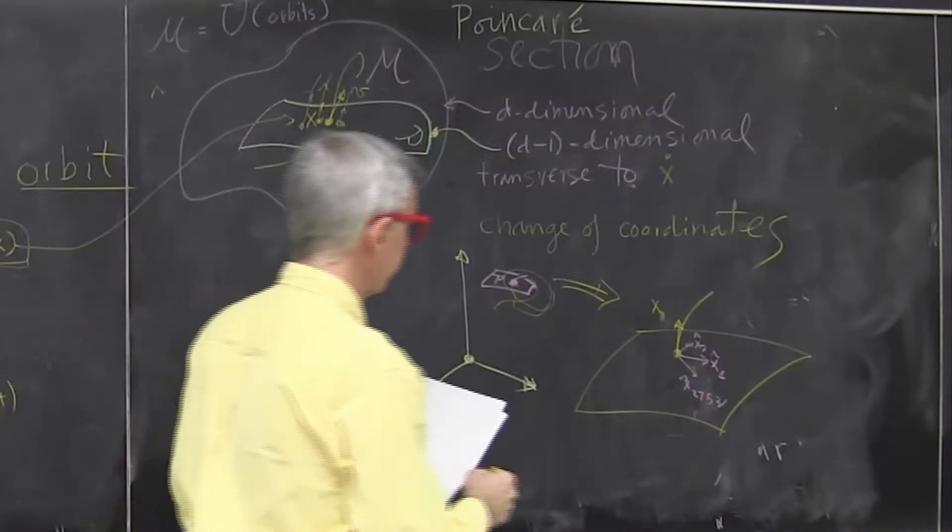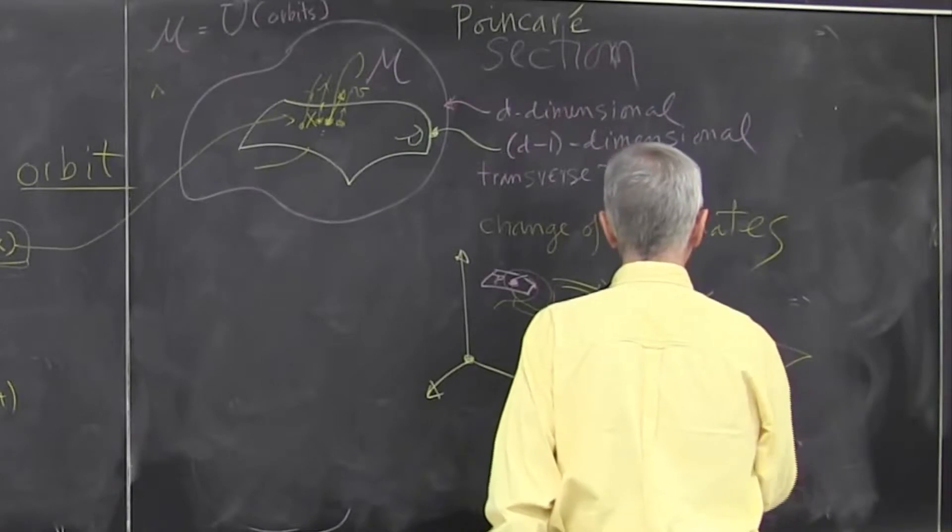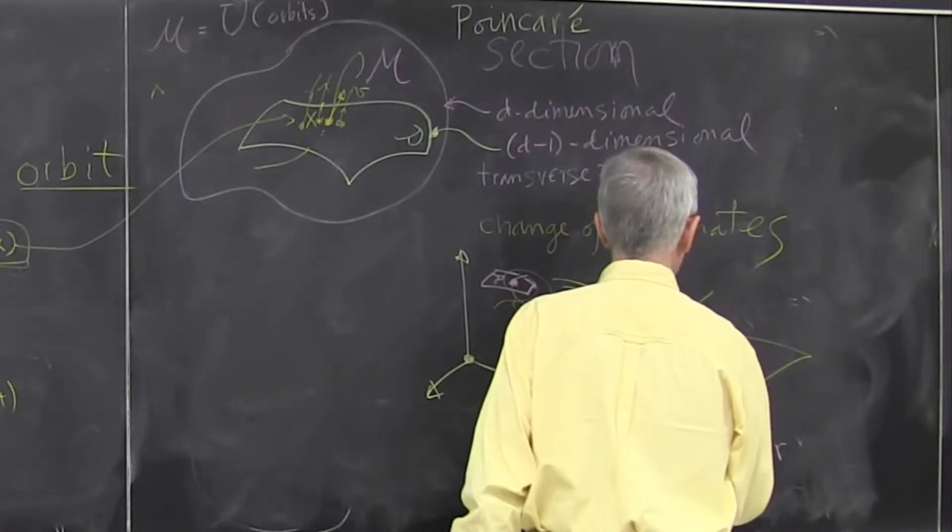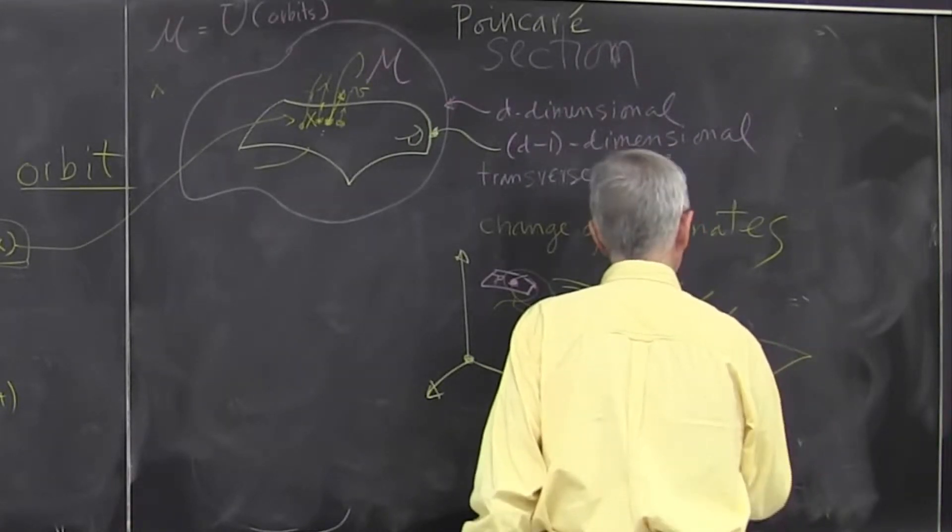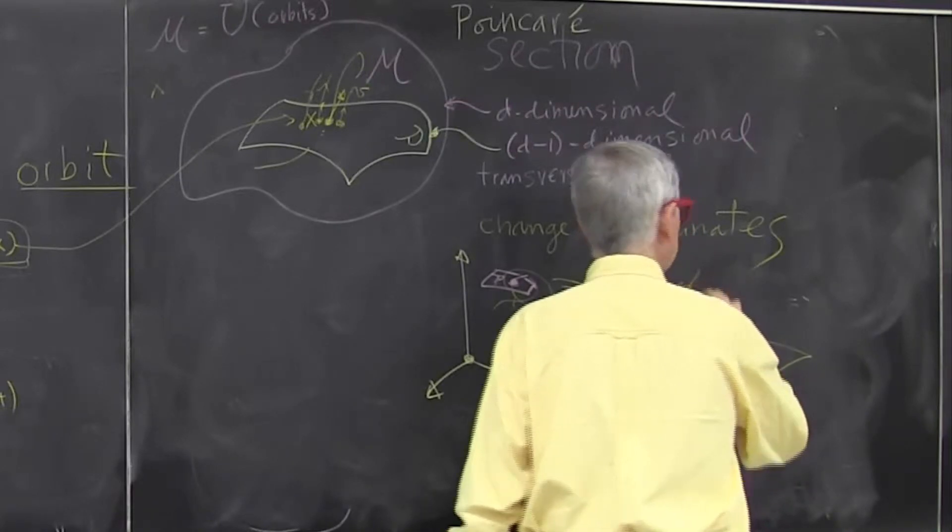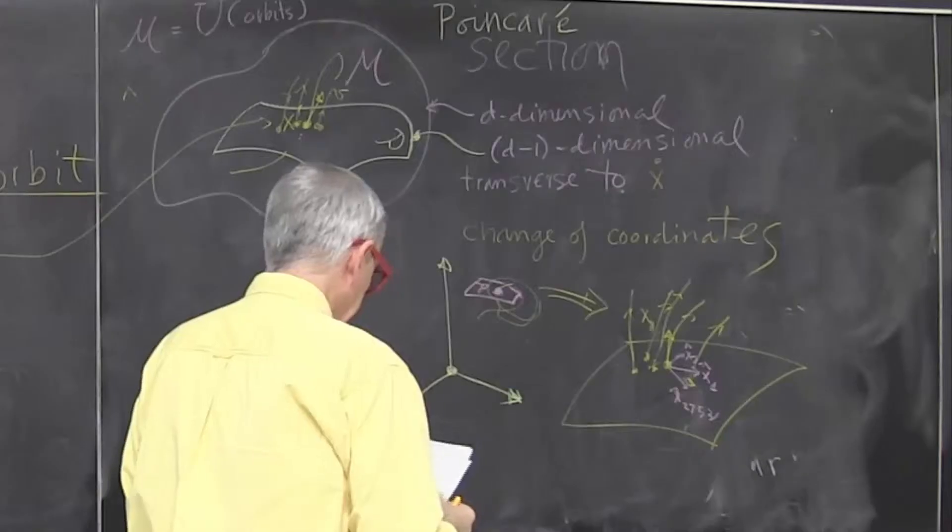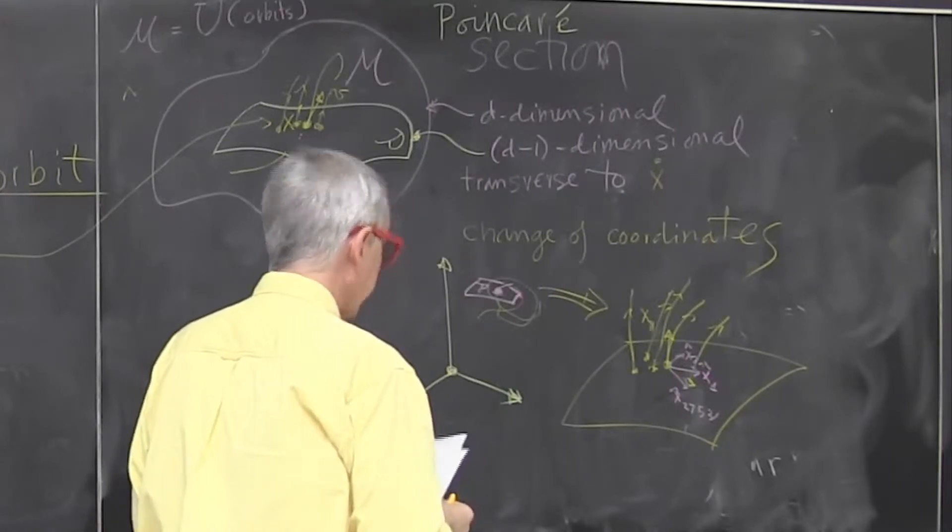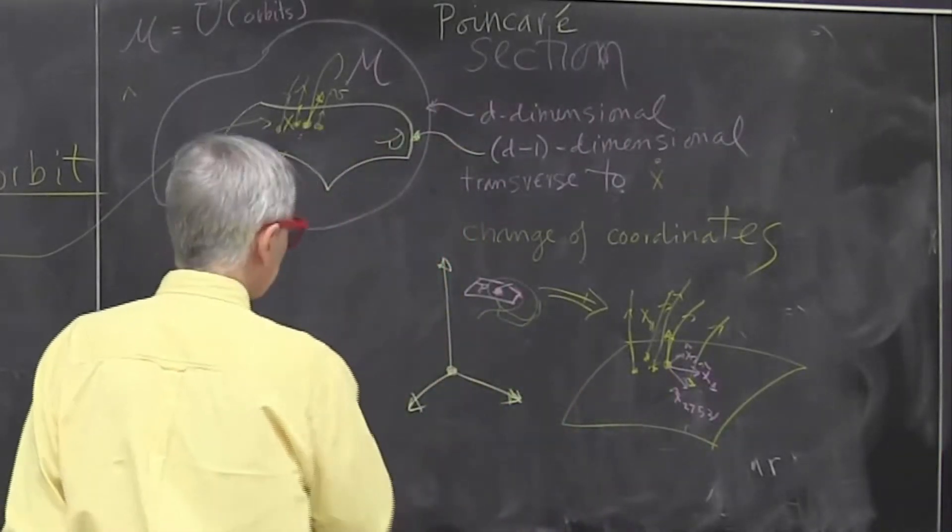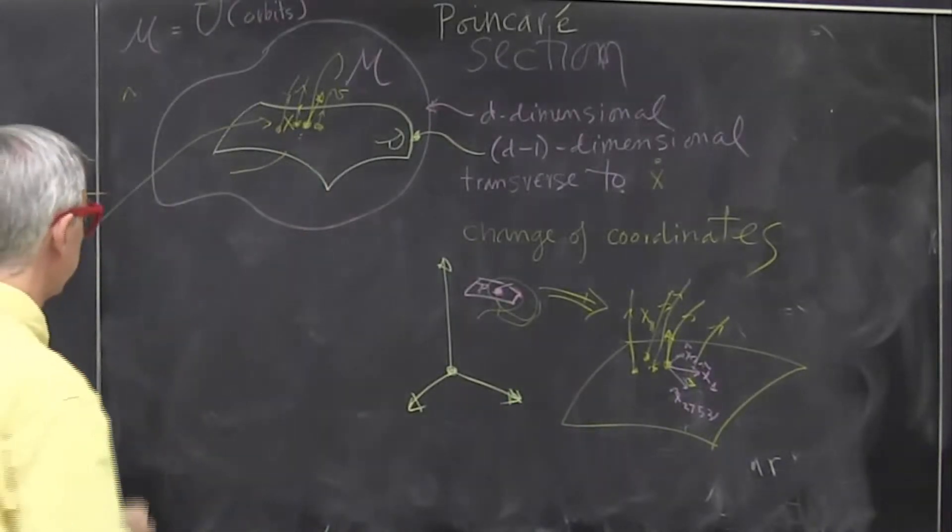And now what happens is from this whole spaghetti, I just get a bunch of points in this hypersurface. And each one of them is a unique label for its future and past. So that's a Poincaré section. And in practice, you try to do simple things.